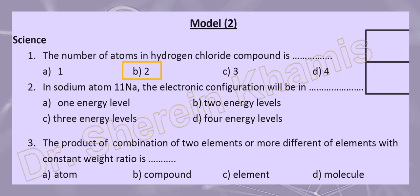Question number two: in sodium atom — sodium with atomic number 11 — the electronic configuration will be: two electrons in first energy level K, eight electrons in second energy level L, and one electron in third energy level M. So the configuration is K=2, L=8, M=1, with three energy levels.